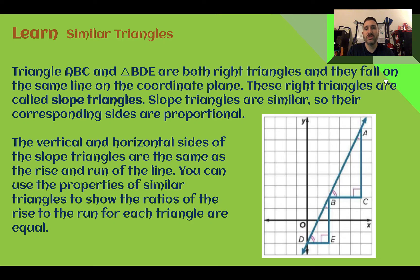Here we have a picture with two similar triangles. We have triangle ABC and triangle BDE. They're both right triangles, and they fall in the same line in the coordinate plane. You can see they're both along this line right here on that coordinate plane. When it's set up like this, these are called slope triangles. They are similar, so their corresponding sides would be proportional.